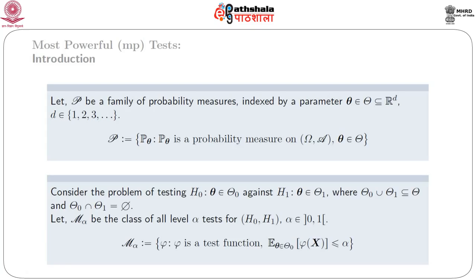We consider P as a family of probability measures indexed by a parameter theta belonging to Theta, which is a subset of R to the power d, where d belongs to the set of positive integers 1 to infinity. That means, script P is equal to the class of those P_theta satisfying: P_theta is a probability measure on (Omega, A) and theta belongs to Theta.